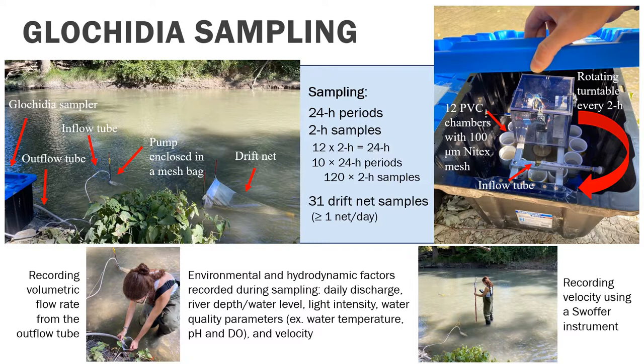Glochidia sampling took place in the late summer of 2020 at the Florence site along the Sydenham River. A custom-built glochidia sampler, as shown here, included a pump that pumped river water through each chamber for two hours, and then it would automatically rotate after two hours, providing observations over a 24-hour period. Sampling took place over 10 days to obtain a total of 120 two-hour samples. In addition to the glochidia sampler, a total of 31 drift net samples were collected, and the environmental and hydrodynamic factors, which are listed here, were recorded throughout each sampling day.